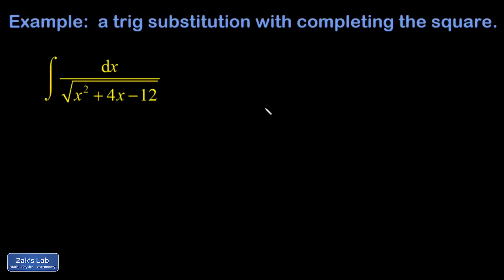This is a trig substitution integral requiring me to manipulate the interior of the square root using the completing the square process. I'm going to do this to fit the form of a Pythagorean trigonometric identity.